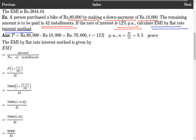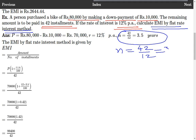Here, note that years are not given — months are given. So we have to convert months into years by dividing by 12. N is equal to 42 upon 12, that equals to 3.5 years.